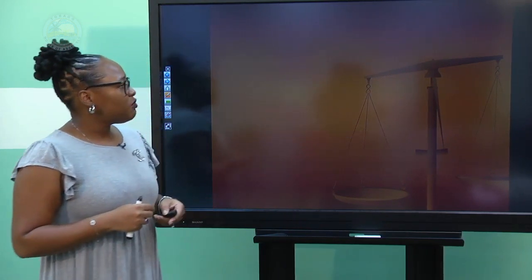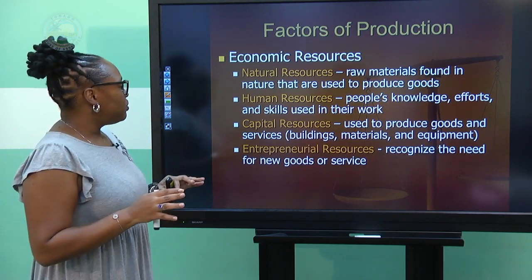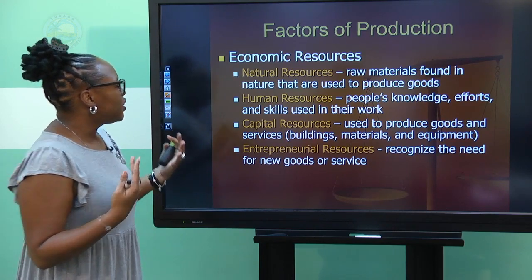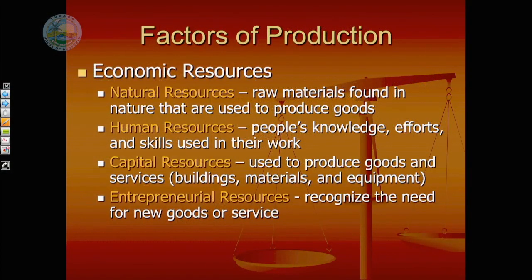Let's look at the factors of production, which help us decide which economic system best suits a country. We have four factors of production: natural resource, human resource, capital resource, and entrepreneurial resource. Natural resources, also considered to be land, are any type of resource found in the earth, the atmosphere, and the sea — fish in the sea, hunting, air, sunlight. Those things are natural resources, also known as land.